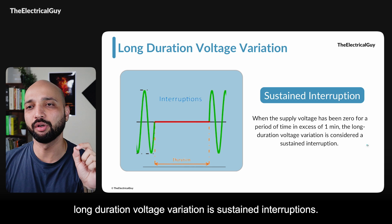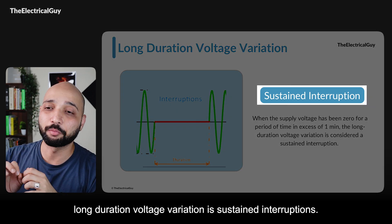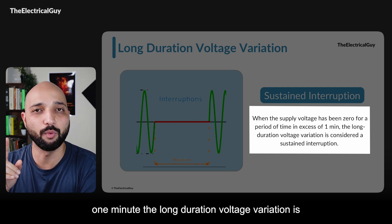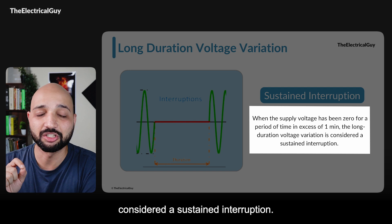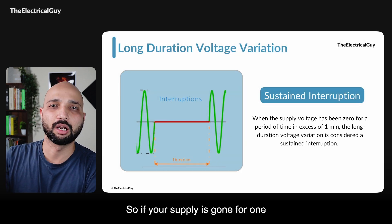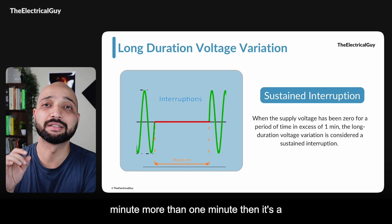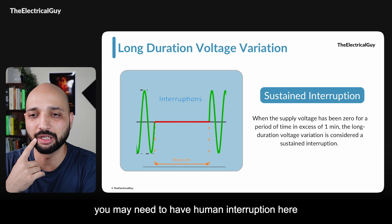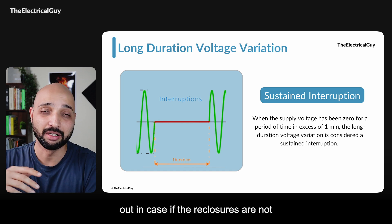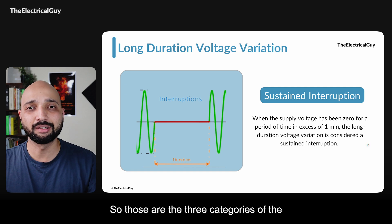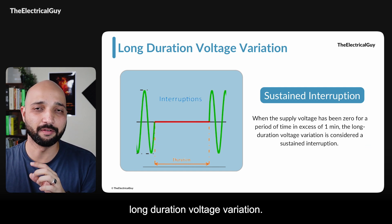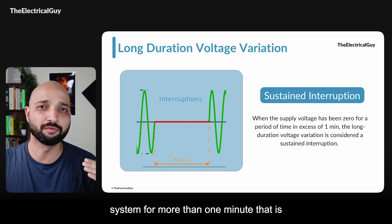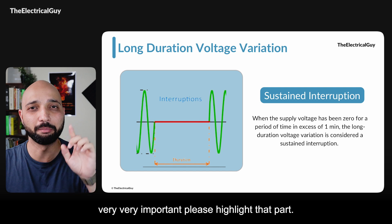The third category in long duration voltage variation is sustained interruption. When the supply voltage has been zero for a period in excess of one minute, it is considered a sustained interruption. If your supply is gone for more than one minute, it is a sustained interruption, and you may need human intervention to identify the issue and clear it, especially if reclosers are not in place. The important point is all these scenarios remain in the system for more than one minute.